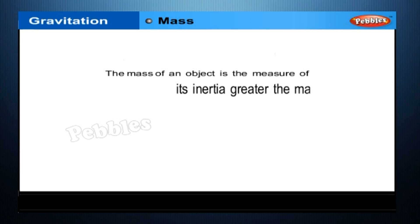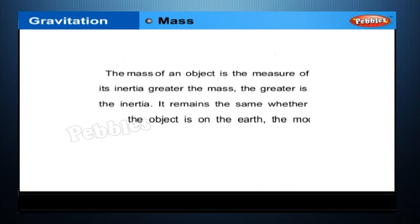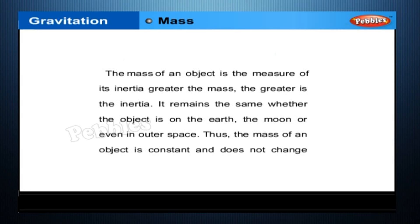Mass: the mass of an object is the measure of its inertia. Greater the mass, the greater is the inertia. It remains the same whether the object is on the earth, the moon, or even in outer space. Thus the mass of an object is constant and does not change from place to place.